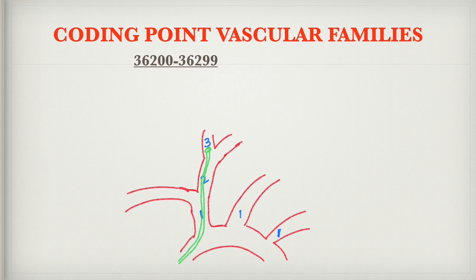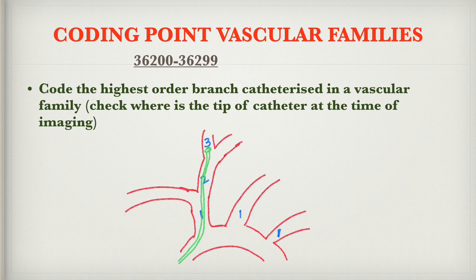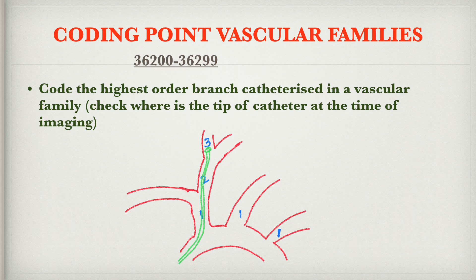Pertaining to vascular families in the code range 36200 to 36299: code the highest order branch catheterized in a vascular family. To determine which blood vessel to code, check where the tip of the catheter is at the time of imaging. If the catheter tip is at a third-order branch, all prior catheterizations through first and second-order branches are included — so code only the third order.